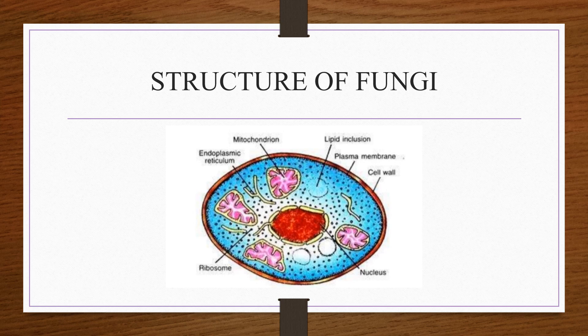Structure of fungi. Fungi are eukaryotic in nature, so they contain a true nucleus. The fungal cell also contains ribosomes, endoplasmic reticulum, mitochondria, lipid inclusions, plasma membrane, and cell wall.